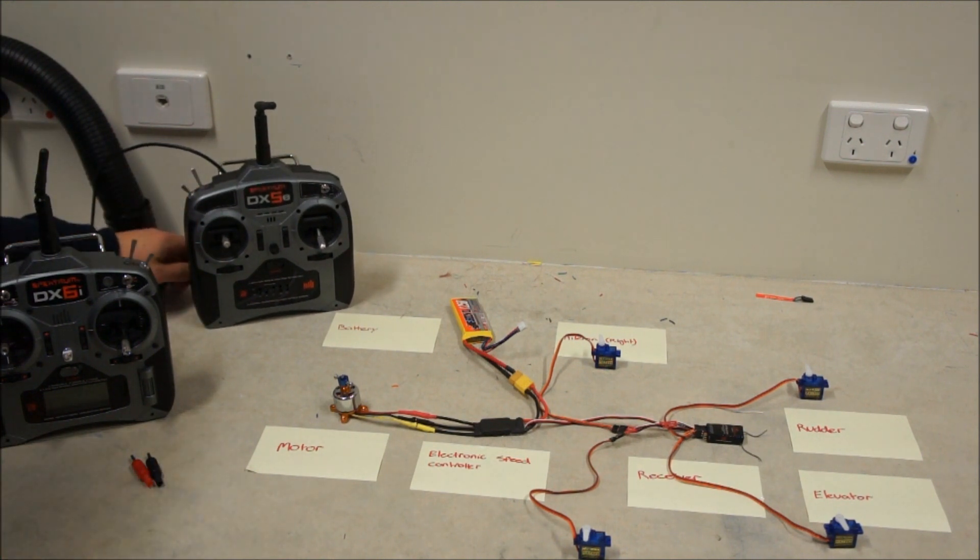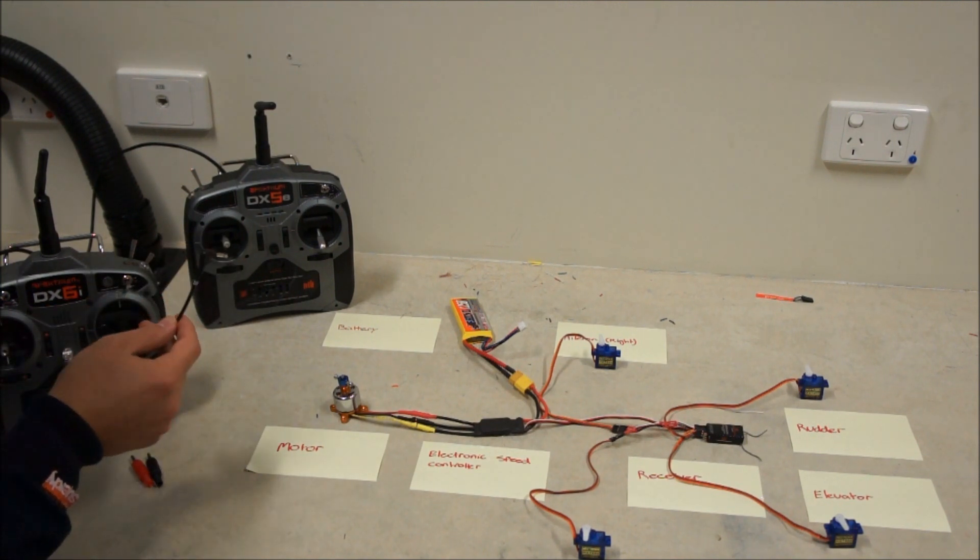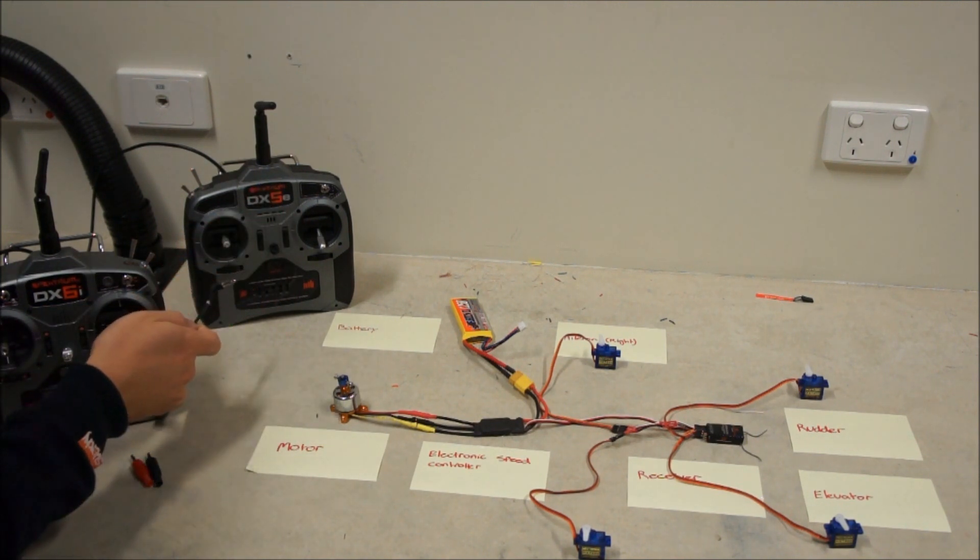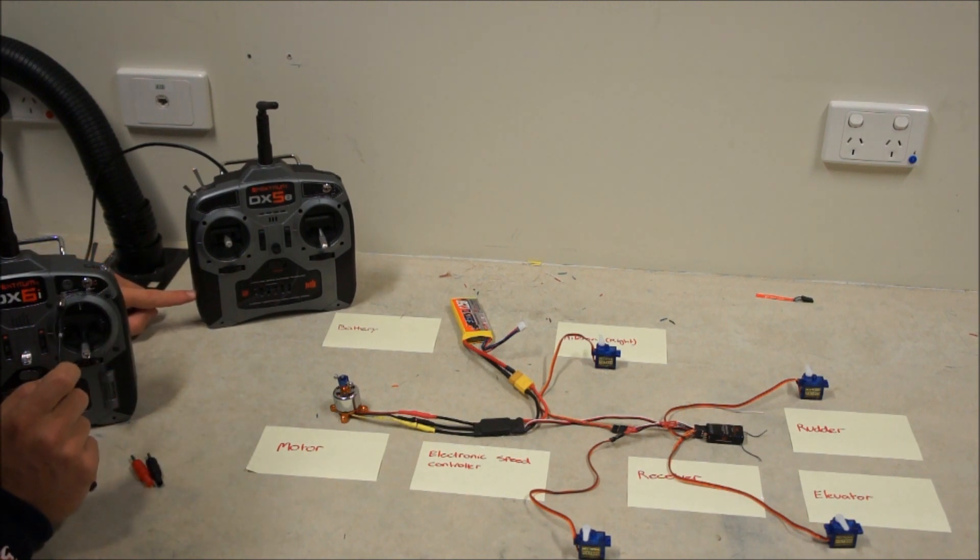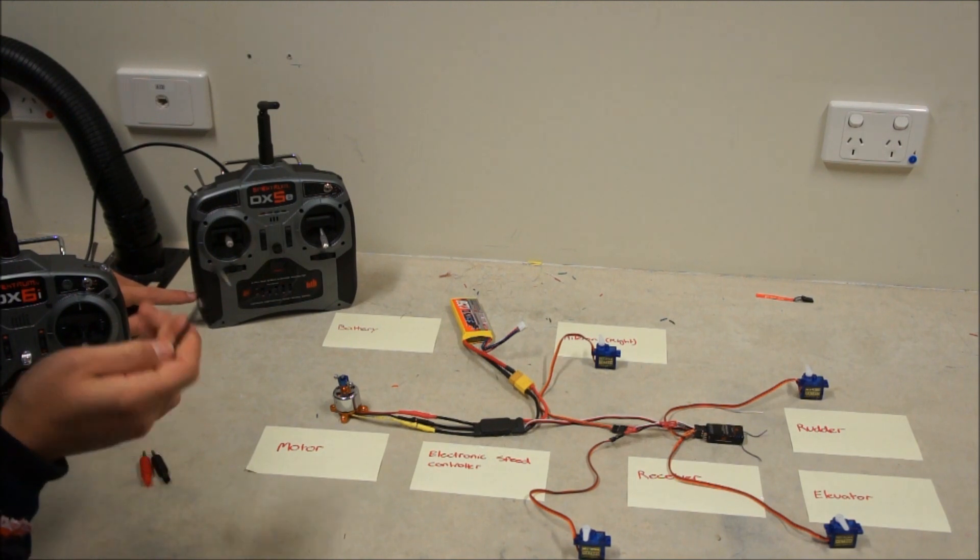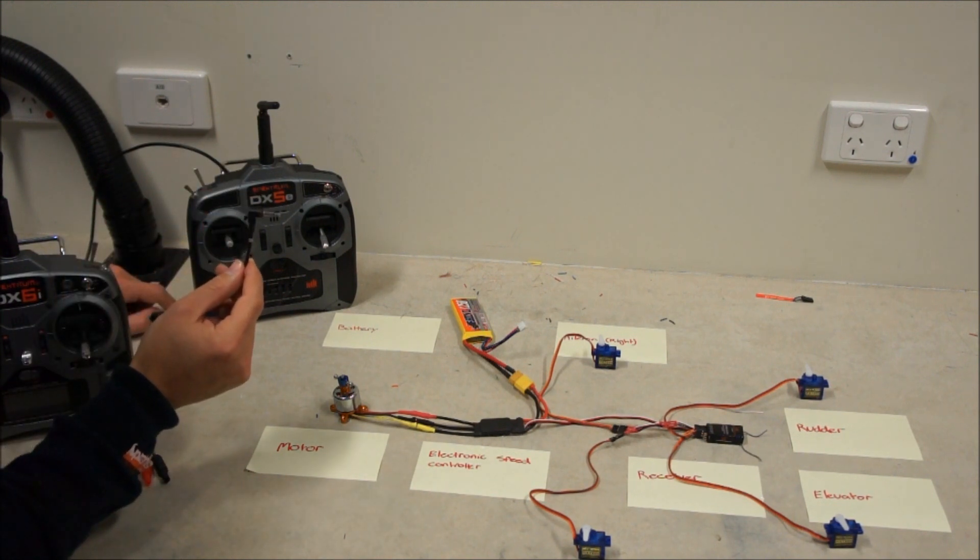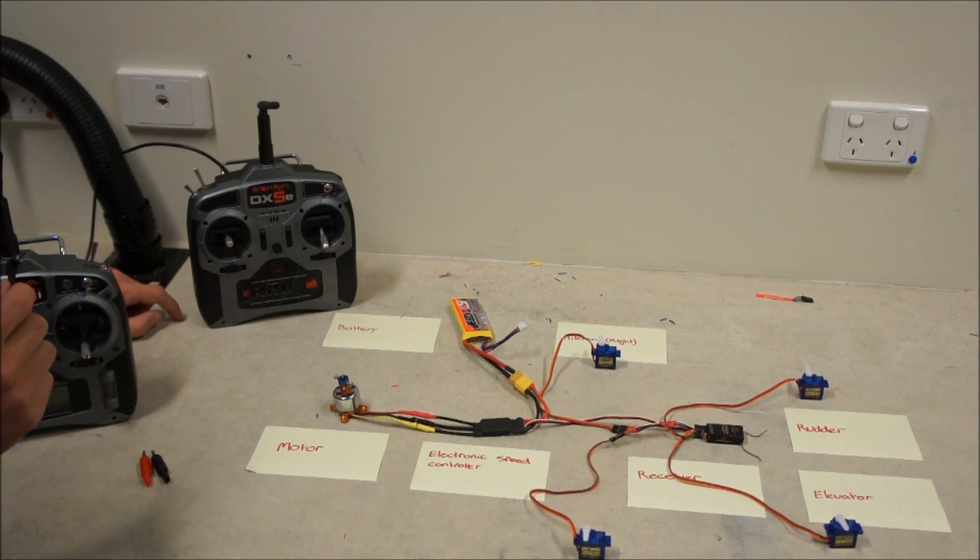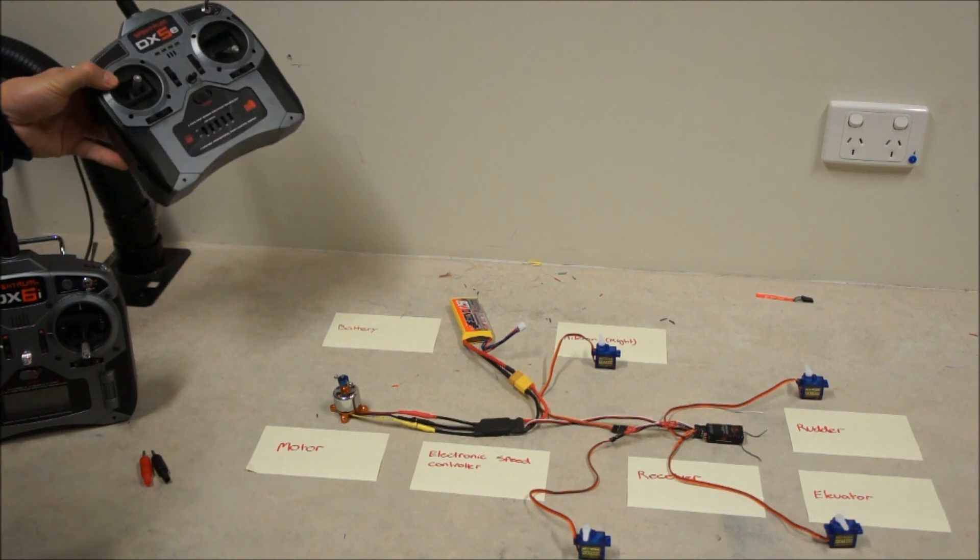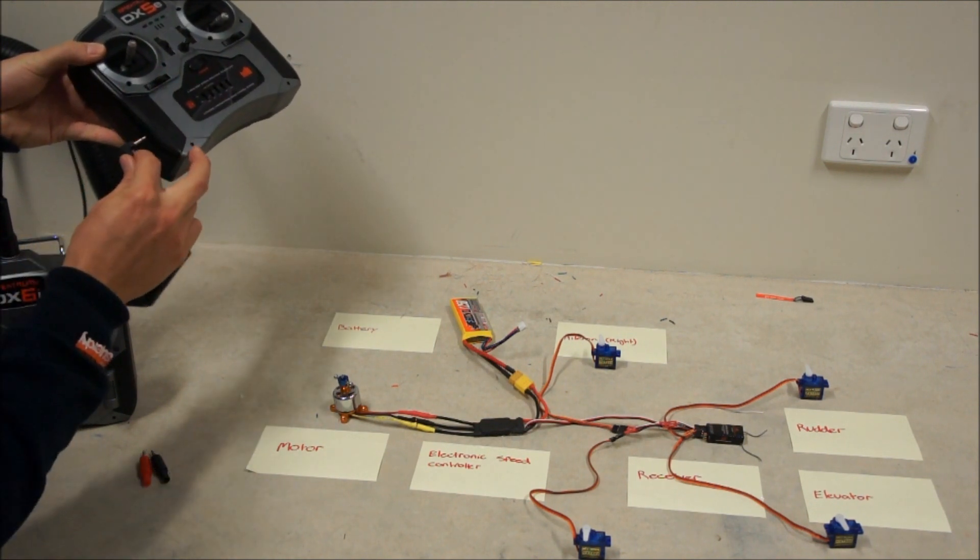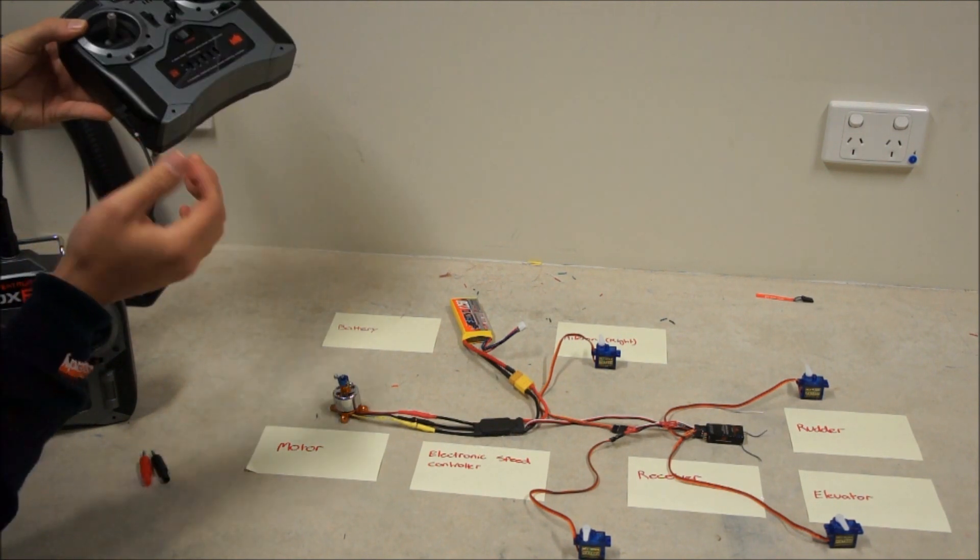So if you email Horizon Hobby and say that you've got a DX5e with a trainer port on the side, there will be a PDF on their website with some details. They'll send you out for free one of these elbow connectors. Now I'm probably a bit disappointed with Spectrum and how they've done their trainer ports just because there's been a fair bit of trouble with them, and even when they've provided this add-on...